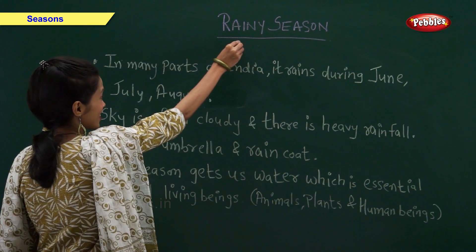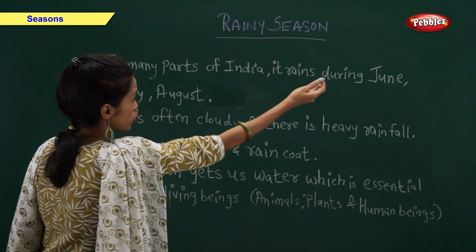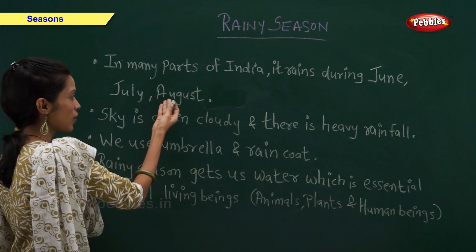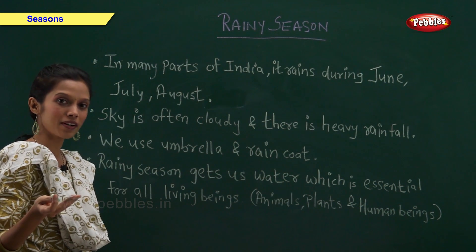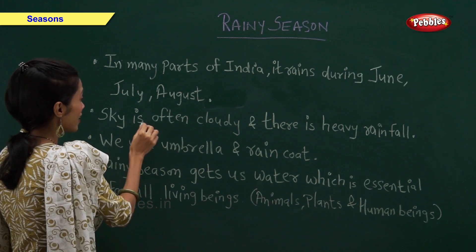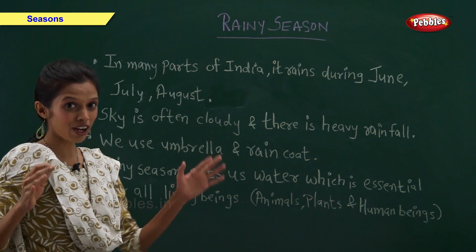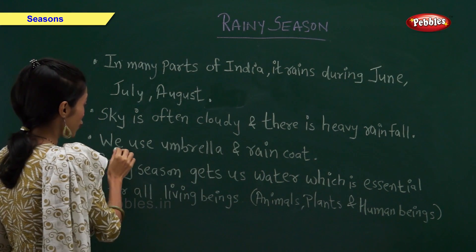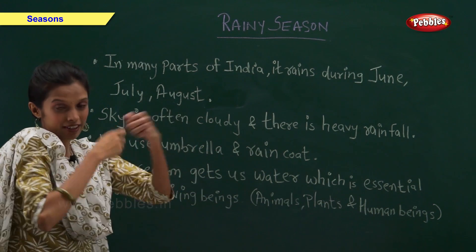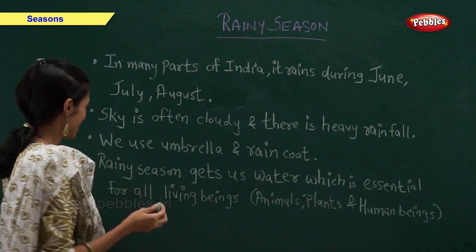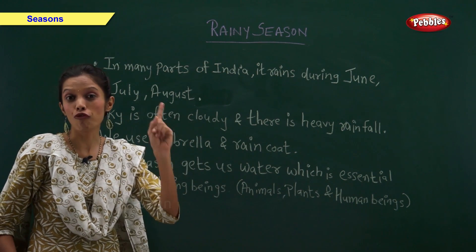Rainy season. In many parts of India, it rains during June, July and August. Sometimes it also rains in September. The sky is often very cloudy and there is heavy rainfall. We use umbrella and raincoat to protect ourselves from getting wet.